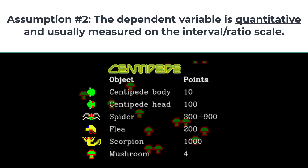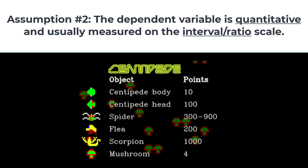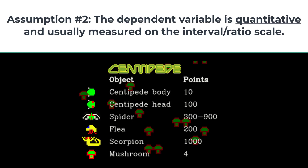Assumption number two: the dependent variable is quantitative and usually measured on the interval ratio scale. Most arcade video games track players' progress with points that add up for completing certain actions. For example, when a player hits a segment of the Centipede, the score increases by 10 points.